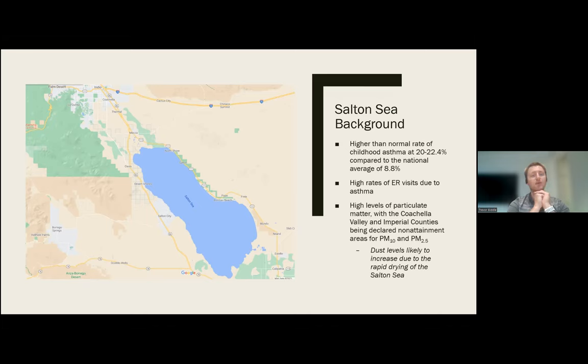In addition to these high rates of asthma, they also have very frequent ER visits for asthma. So the communities surrounding the Salton Sea are about in the 75th or higher percentiles as far as ER visits for asthma in the state of California. Additionally, there are also high levels of particulate matter with the Coachella Valley and Imperial counties being declared non-attainment areas for PM10 and PM2.5. That means that they don't meet the guidelines for air health quality for either particulate matter between 2.5 and 10 microns or under 2.5 microns. And as it was pointed out previously, the dust levels are likely to get even worse because of how the sea is rapidly drying.